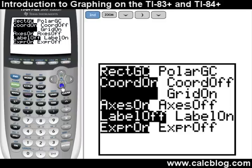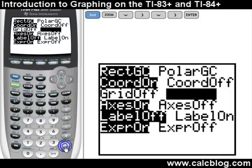AxesOn and AxesOff toggle the coordinate axes, and LabelOff and LabelOn give you the option to display labels on these axes or not. Finally, XperOn and XperOff set whether or not you want the equation to be displayed on top of the graph when using the trace function. You'll notice that when we go back to the graph, the grid is now displayed.